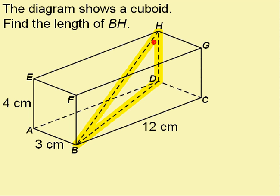I'm going to convert my 3D diagram into a 2D diagram. So this is the right angle triangle. I've got B here, D here, and H here. And I'm looking for BH, which is this.